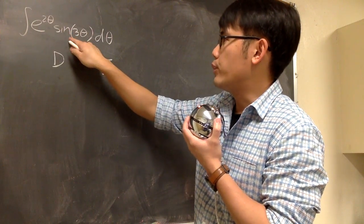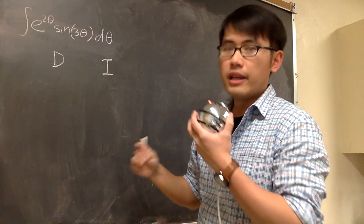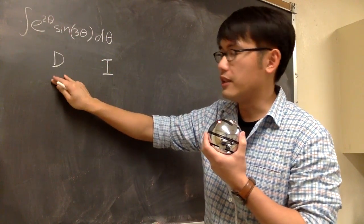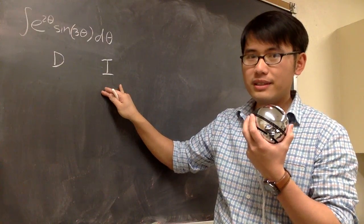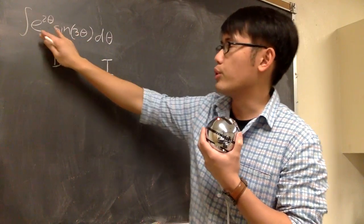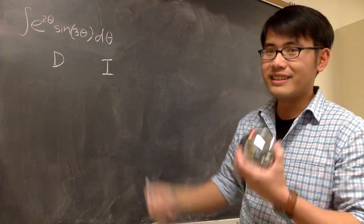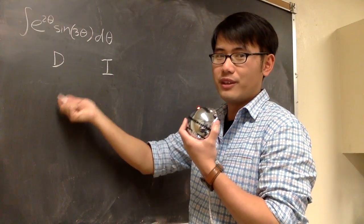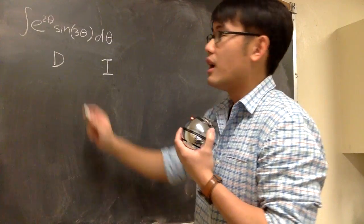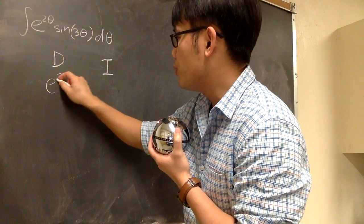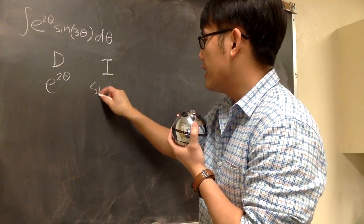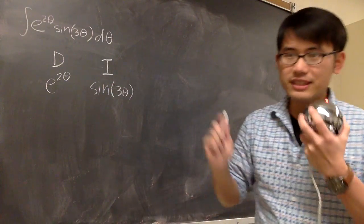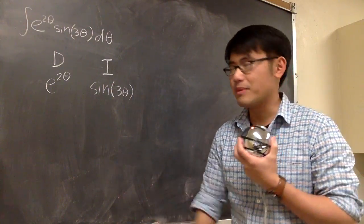We have e to the 2 zeta and we have sine of 3 zeta. They are both equally easy to differentiate or to integrate. I can totally integrate sine, and I can totally integrate e to the something. So in this case, it doesn't matter which one you choose to differentiate — it doesn't matter. Let me differentiate e to the 2 zeta and integrate sine of 3 zeta. If you want to switch these two choices, it's fine as well. The answer will be the same at the end.